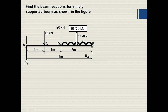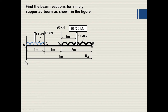First we'll convert the uniformly distributed load into a point load. For 10 kilonewton per meter acting over 2 meter length, the equivalent point load is 10 into 2, which equals 20 kilonewton. It acts at the center of the 2 meter length, because for a rectangular distribution the centroid is at the center.